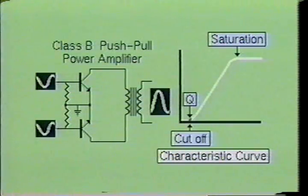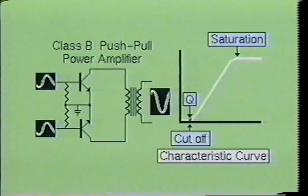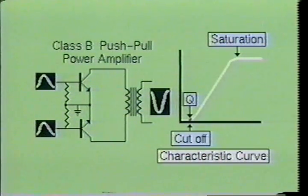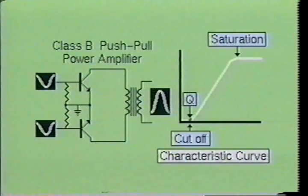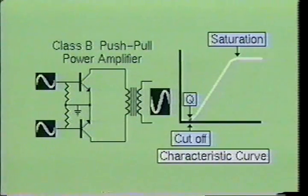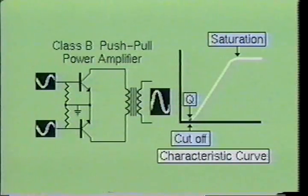Power amplifiers, on the other hand, are usually operated as class B amplifiers and are biased at the cutoff point on the curve. This allows only the increase of base current to become amplified. Since part of the signal is amplified in the lower knee of the curve, it will produce some distortion. Generally, power amplifiers are operated in the push-pull configuration, which allows for proper amplification of both sides of the signal.